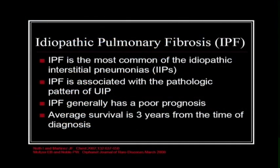IPF is the most common of the idiopathic interstitial pneumonias. It's associated with the pathologic pattern of UIP, which I'll show you some slides of in a minute. It carries a poor prognosis — the average survival is three years from the time of diagnosis.